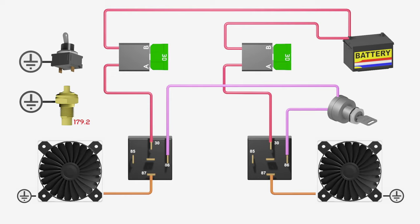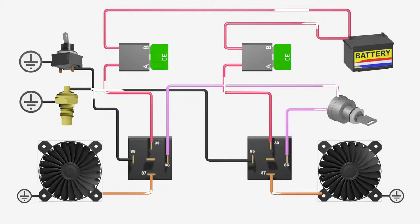Adding a common ground at Terminal 85 for the relays will cause them to switch on at the same time. This can be done through a single sending unit. A manual toggle switch can also be added as a backup for the sending unit, or to manually turn both fans on at one time.